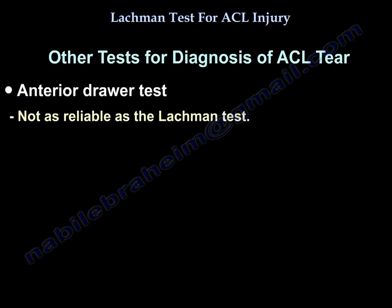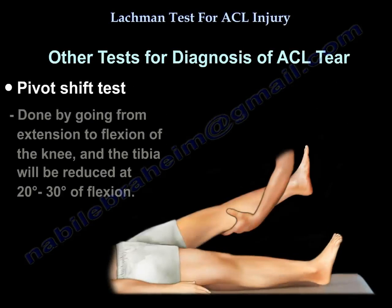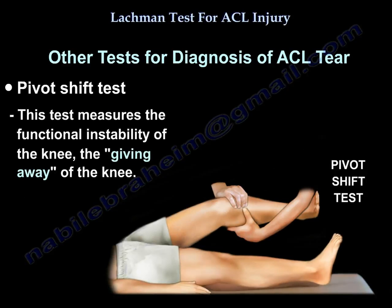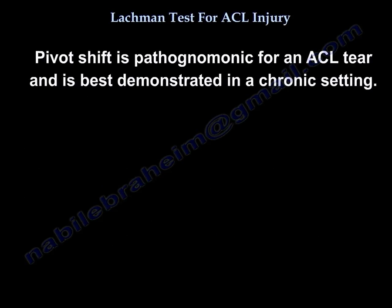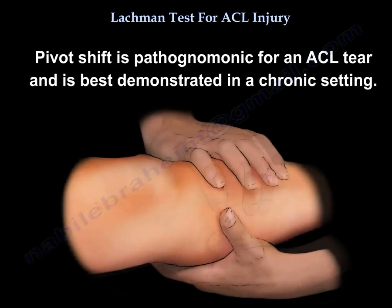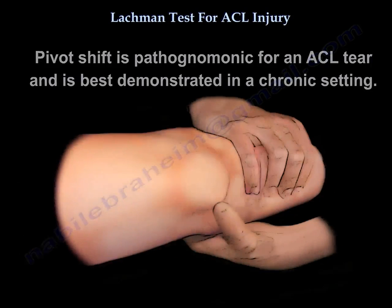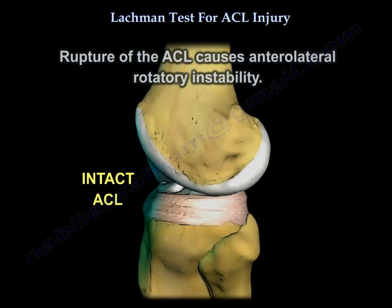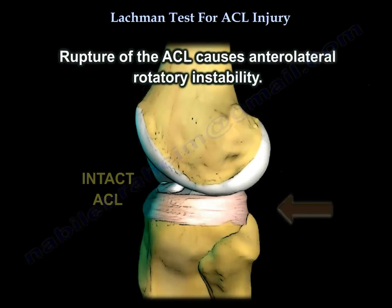The anterior drawer test is not as reliable as the Lachman Test. The pivot shift test is performed by going from extension to flexion of the knee, and the tibia will be reduced at 20 to 30 degrees of flexion. That test measures the functional instability of the knee — the giving way. The pivot shift is pathognomonic for an ACL tear and is best demonstrated in a chronic setting. It is a more difficult test than the Lachman.